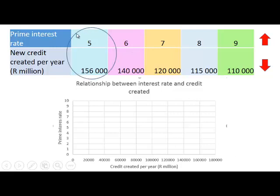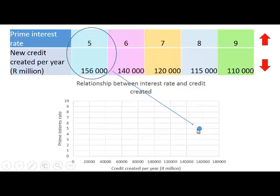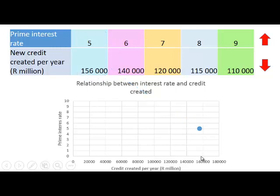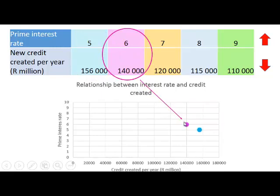Showing the first blue point: when the prime interest rate is 5%, we can see that 156,000,000,000 rand worth of new credit was created. When the prime interest rate went up to 6%, 140,000,000,000 rand of new credit was created.